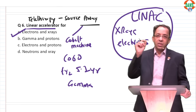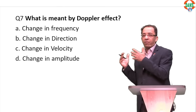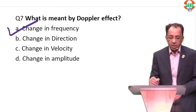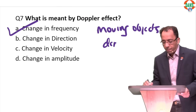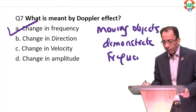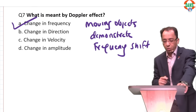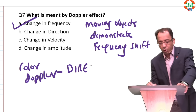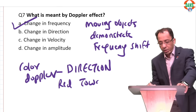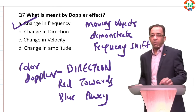Doppler effect: any moving object producing sound will show a change in frequency — moving objects demonstrate frequency shift. In color Doppler, the basis is direction of flow. Red indicates flow towards the ultrasound probe; blue indicates flow away from the probe. Doppler is used in deep vein thrombosis screening, carotid stenosis assessment, and in pregnancy for IUGR patients.